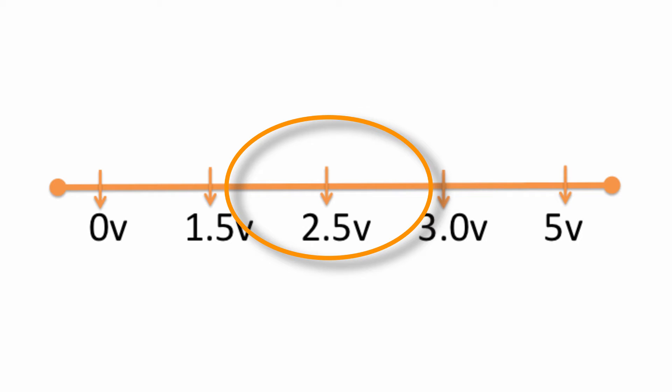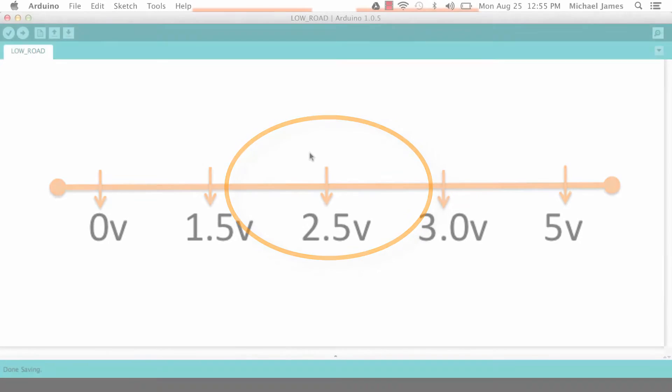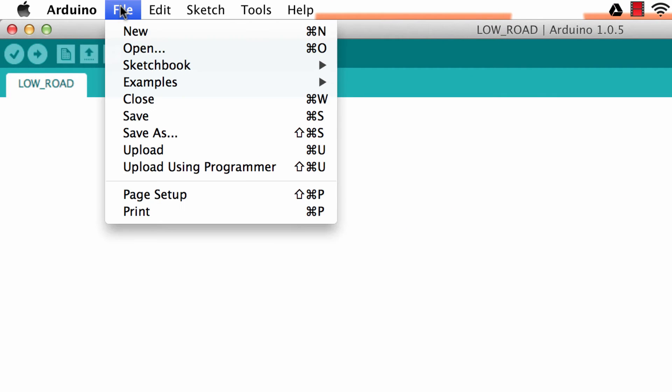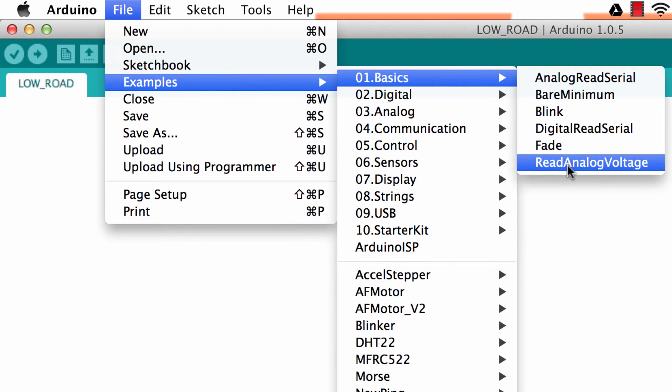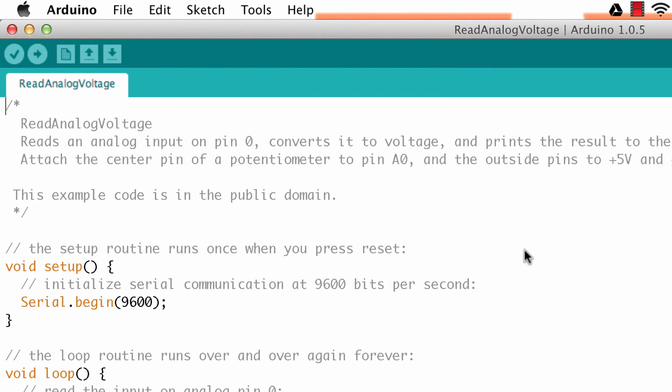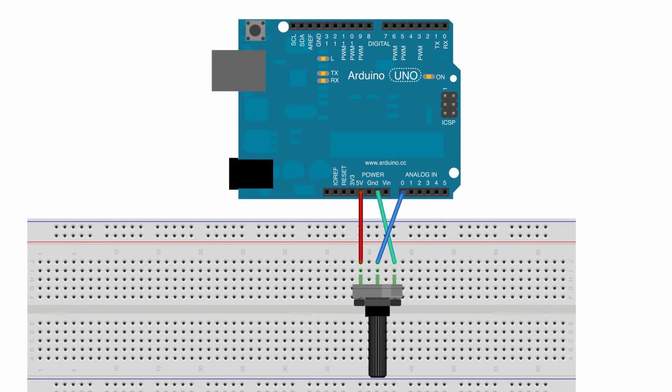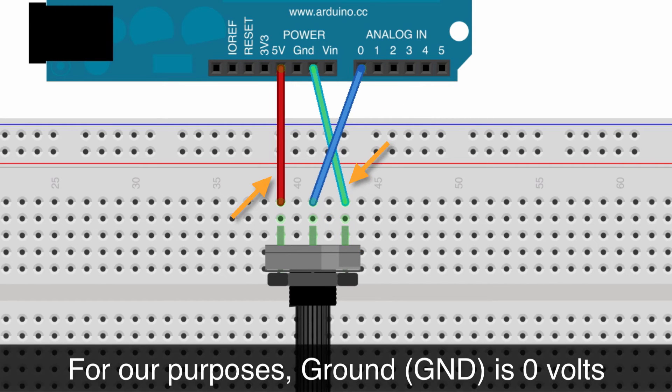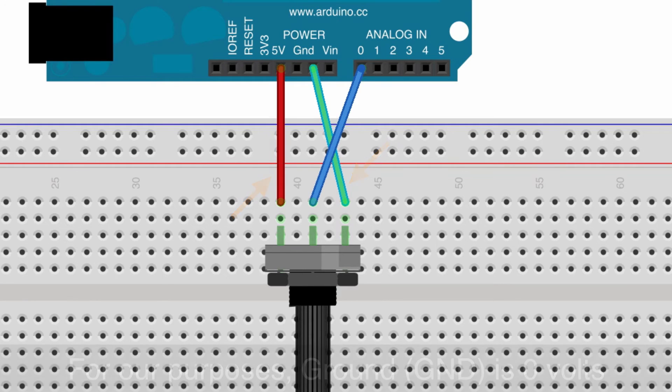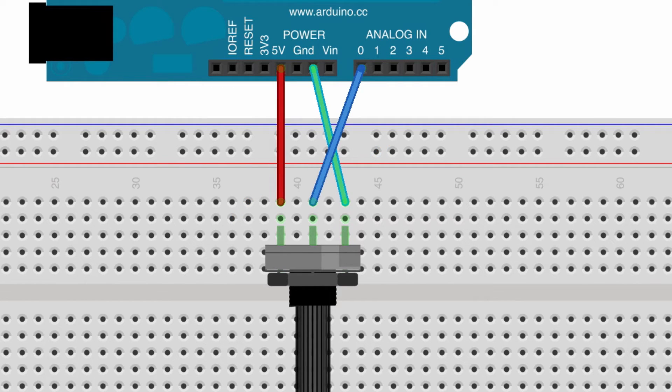So why don't we put some skin on this low and high. Here I am in the Arduino IDE and I'm gonna go up to File, Examples, Basics, Read Analog Voltage. What this sketch does is it actually reads the voltage coming off of a potentiometer. If we look at the circuit real quick, we've got a potentiometer here and we've got the middle pin going to an analog pin.